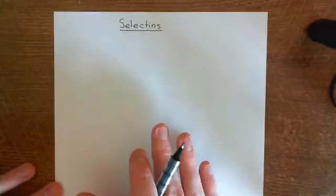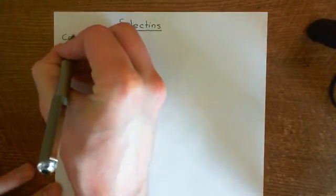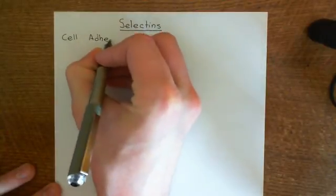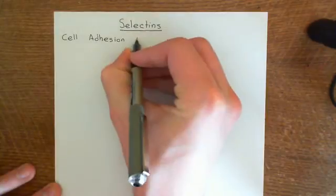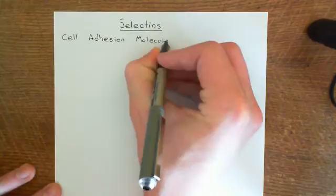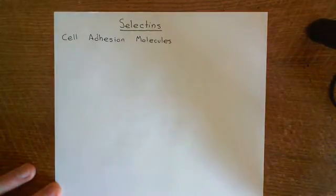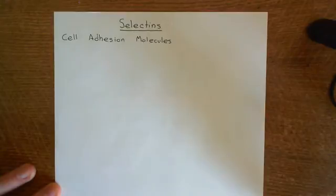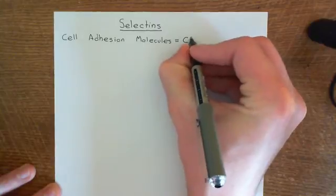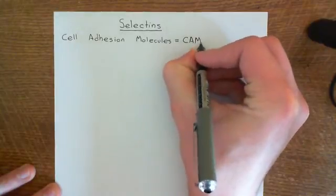Cell adhesion molecules, or CAMs for short, are integral membrane proteins which cells have inserted into their phospholipid bilayer. They can attach either to other cell adhesion molecules on other cells, forming a cell-cell interaction, or they can attach onto components of the extracellular matrix, giving you a cell-extracellular matrix connection.